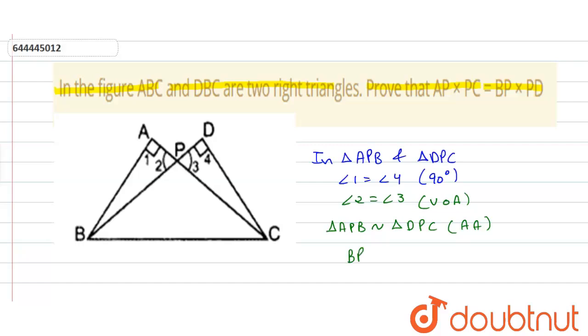So BP upon PC is equal to AP upon PD, because in similar triangles the sides are proportional.